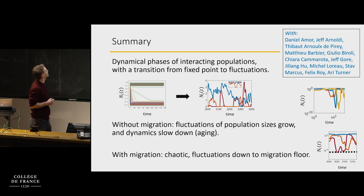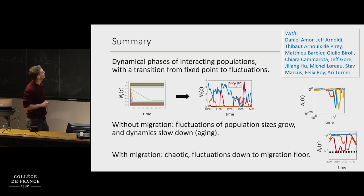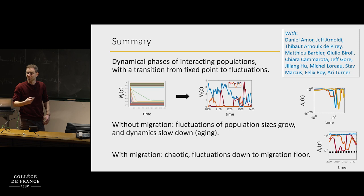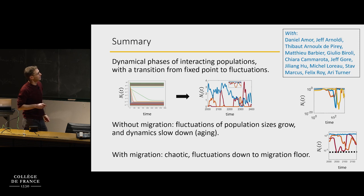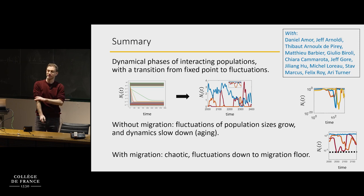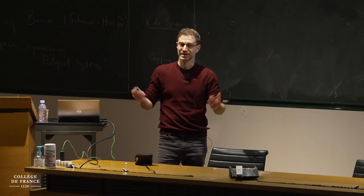Let me quickly summarize: we saw these dynamical phases, this transition from a fixed point to fluctuations. Without migration, we see fluctuations that keep growing — eventually real finite populations will go extinct if there's no spatial structure. When you have migration, you have these chaotic fluctuations but with very large fluctuations in population sizes. Thank you.